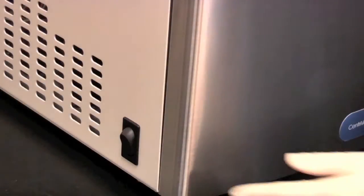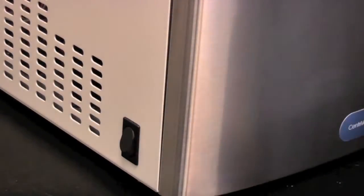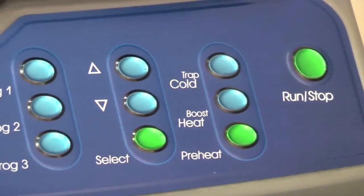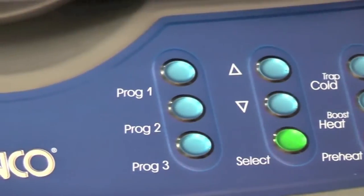Using the CentraVap Complete is simple. Turn the system on. Press the cold trap button. When the indicator goes from blinking to solid, the cold trap is ready.